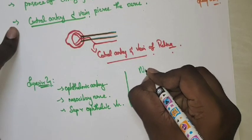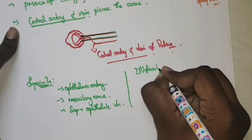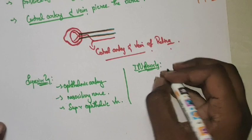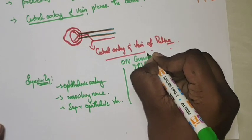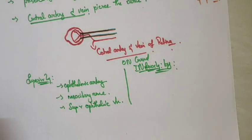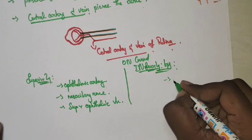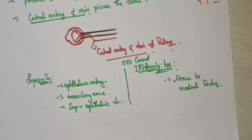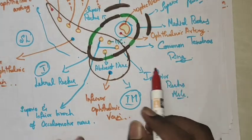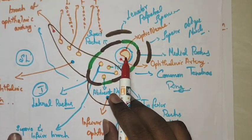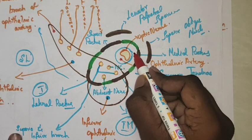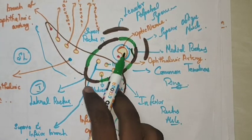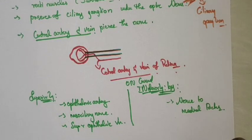For the inferior relations: the optic nerve is crossed inferiorly by the nerve to the medial rectus. Looking at the picture, we can see the optic nerve here and the medial rectus here — the nerve to the medial rectus crosses inferiorly under the optic nerve. That is the inferior relation.